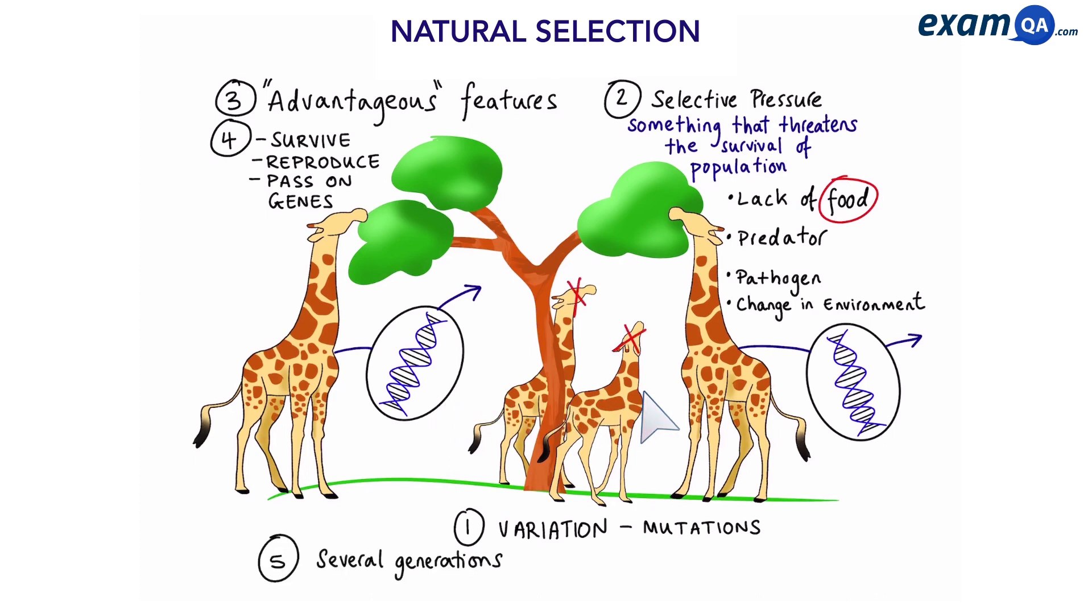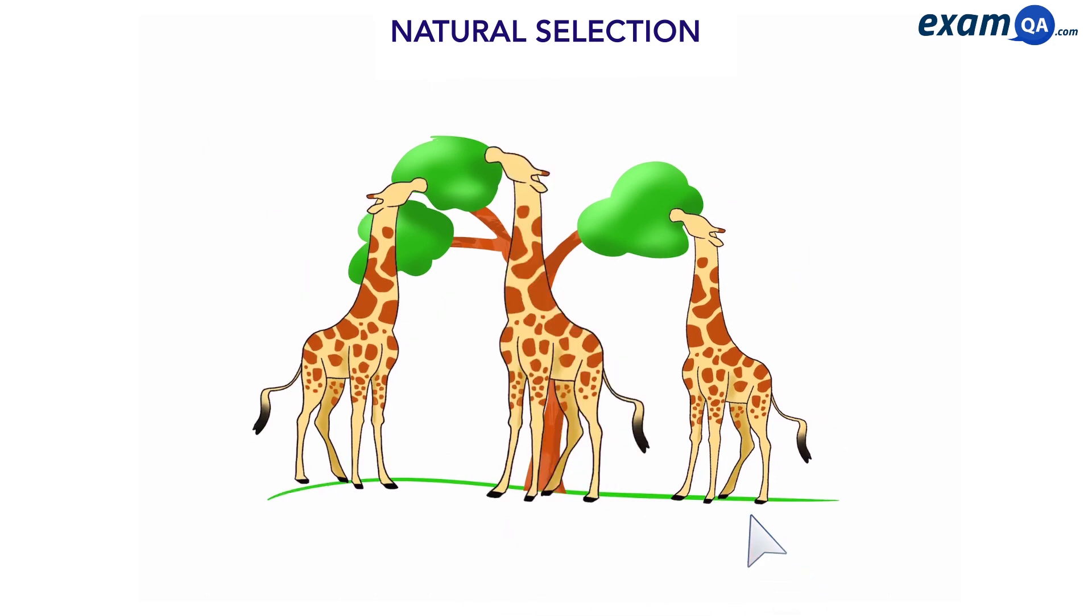So this happens for several generations until the advantageous genes become more common and then we get a population where most of the giraffes have long necks.